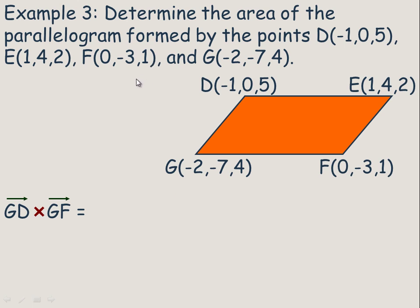In example 3, we're going to determine the area of the parallelogram formed by these four points D, E, F, and G. In order to find the area, we'll use the magnitude of the cross product. So all we need to do is find two vectors that define two non-parallel sides of this parallelogram.